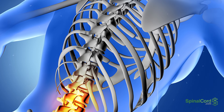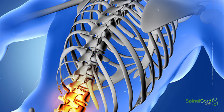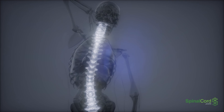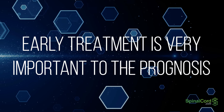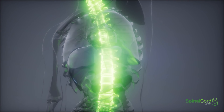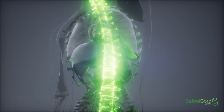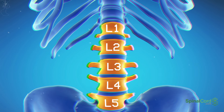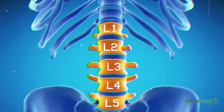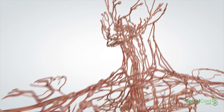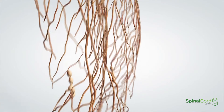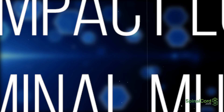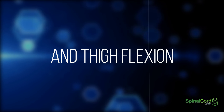Lumbar spinal cord injuries, including L1 through L5 injuries to the lumbar spine, are severe but not always life-threatening. Early treatment is important to the prognosis. The lumbar spine is located in the lower back, below the cervical and thoracic sections of the spine. It consists of five vertebrae known as L1 through L5. These lumbar vertebrae contain spinal cord tissue and nerves which control communication between the brain and the legs. Damage to the lumbar spinal cord affects the hips, groin, and may impact the lower abdominal muscles and thigh flexion as well.